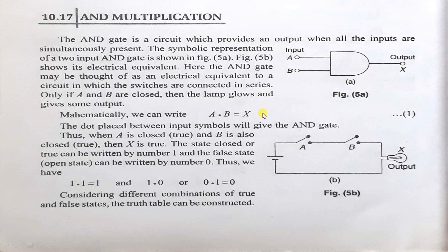It is represented as X is equal to A into B. So if you multiply A and B, you will get X. That is the output. This is about AND gate.